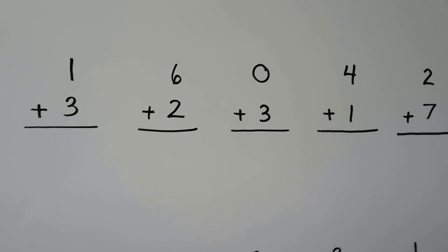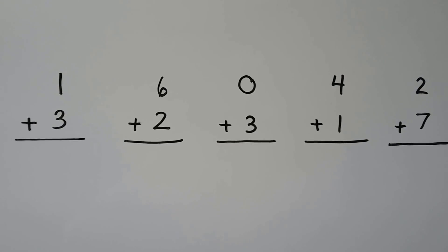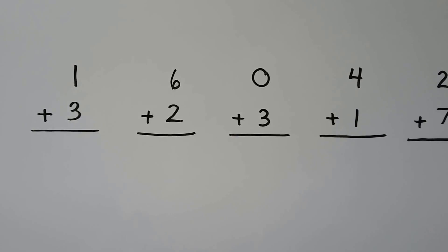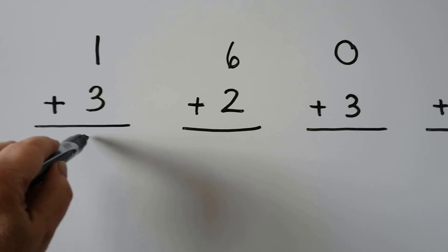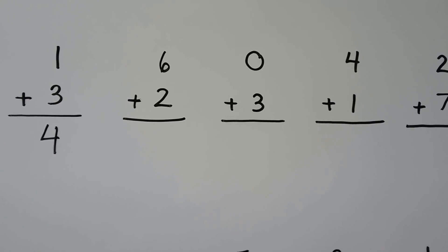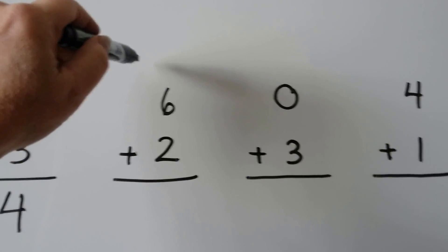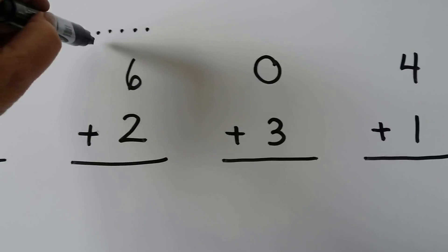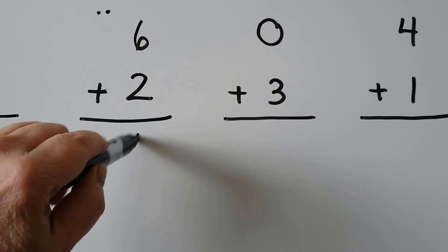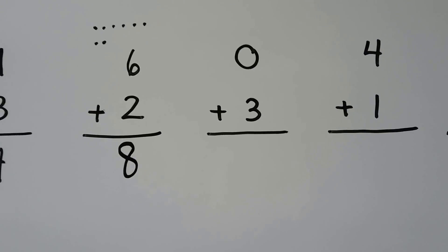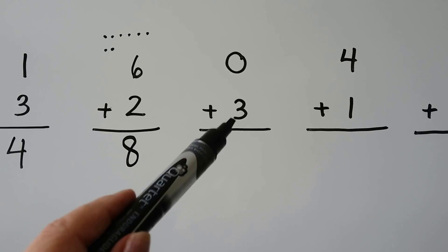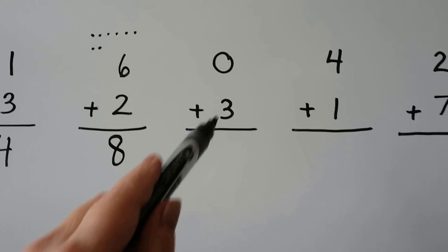Now here we have a lot of addition problems. We have one plus three — do you know what one more than three is? It would be four. Do you know six plus two? If it's hard, we can make dots — one, two, three, four, five, six, and two more dots would be seven, eight. Six plus two is eight. How about zero plus three? Three. Remember that any number with zero added to it, the number stays the same. So this would just be three.